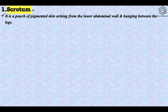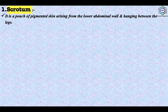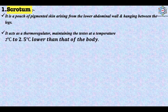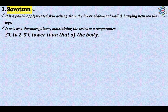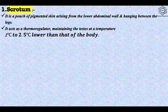The first organ is the scrotum. It is a pouch of pigmented skin arising from the lower abdominal wall and hanging between the legs. The scrotum contains the external spermatic fascia, testes, epididymis and ductus deferens, and is homologous to the labia majora in females. It acts as a thermoregulator, maintaining the testes at a temperature 2 to 2.5 degrees centigrade lower than that of the body, thereby protecting the sperm. When temperature falls, the scrotum shrinks, becomes thick and brings the testes close to the body for warmth. When temperature rises, the scrotum becomes relaxed, thin and flaccid to lose heat. If the testes fail to descend into the scrotum, it causes sterility.